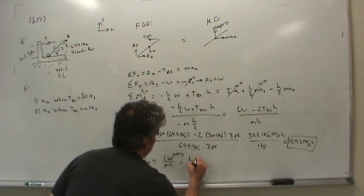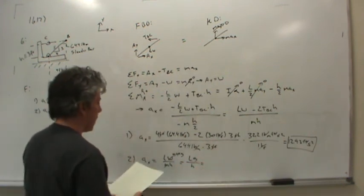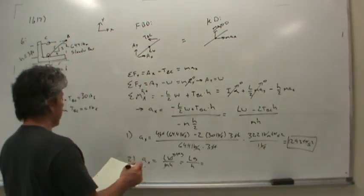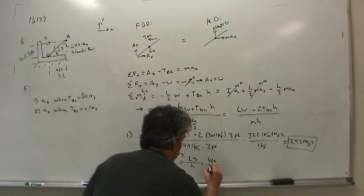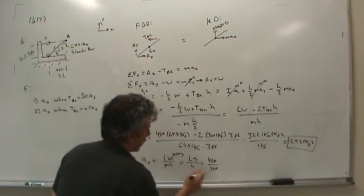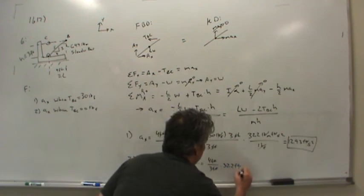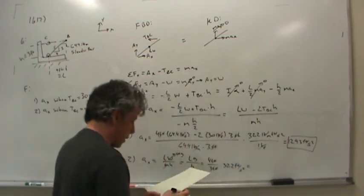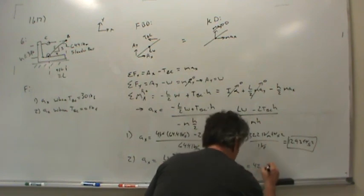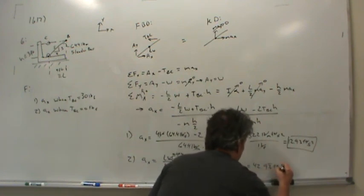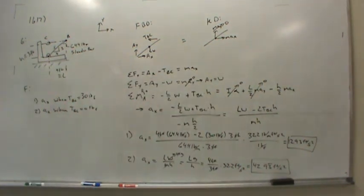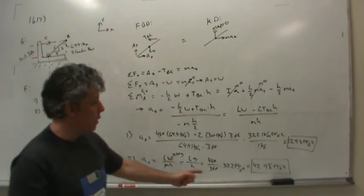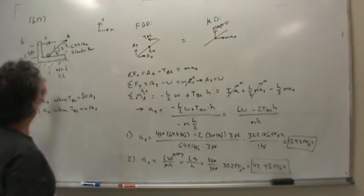And so the length L is 4 foot, the height H is 3 foot, takes care of L over H, times 32.2 feet per second squared. And that comes out to 42.93 repeating feet per second squared. So to get the tension of the cable to be 0, we have to accelerate at more than 1 G this frame.